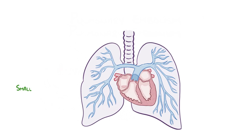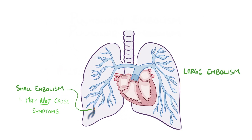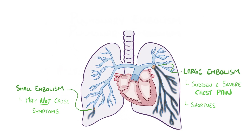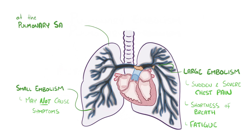A small pulmonary embolism might not cause any symptoms, whereas a large one can cause sudden and severe chest pain, shortness of breath, as well as fatigue. If a large pulmonary thromboembolism happens at the pulmonary saddle, then it blocks blood from going to both lungs, and this can cause sudden death.